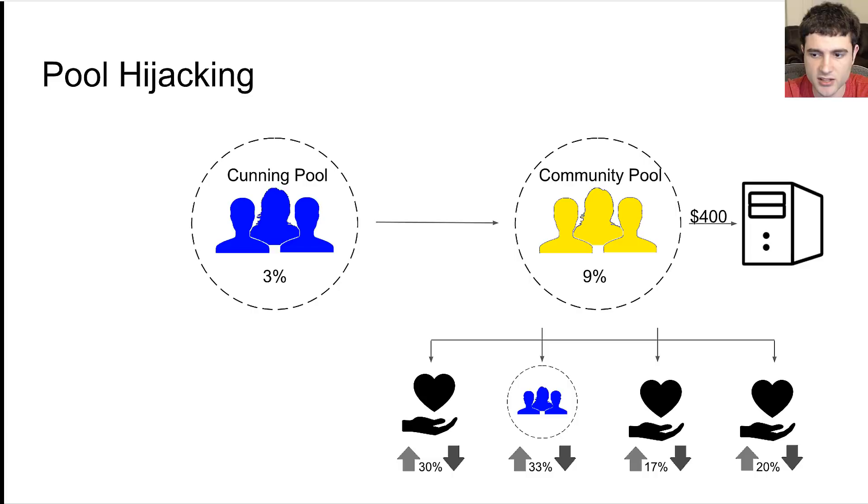So they look at community pool and think, wouldn't it be nice if we just delegate our stake to community pool and then add ourselves as a cause? As you can see in the picture, cunning pool has gone from 6% to 9% of all the stake. Because there's more people on the network now, their server cost has gone up to maybe $400 a month. So now cunning pool owns 33% of all stake of community pool, and they add themselves as a cause. You can see at the bottom, 33% of all profits will now go to cunning pool because they voted for themselves.